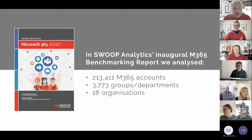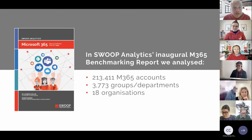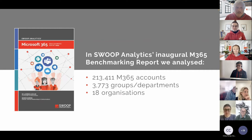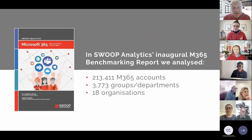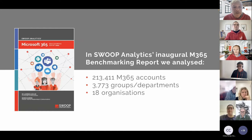Those of you familiar with Swoop and our benchmarking know that we don't do surveys — we analyse what people are actually doing by looking at the digital trails they leave when they're interacting. In this case with M365, we had 18 organisations, over 200,000 accounts. Taking out guests, we're around 113,000 accounts and nearly 4,000 groups. This time we're able to analyse groups as defined in your active directory, which is representative of your hierarchy.